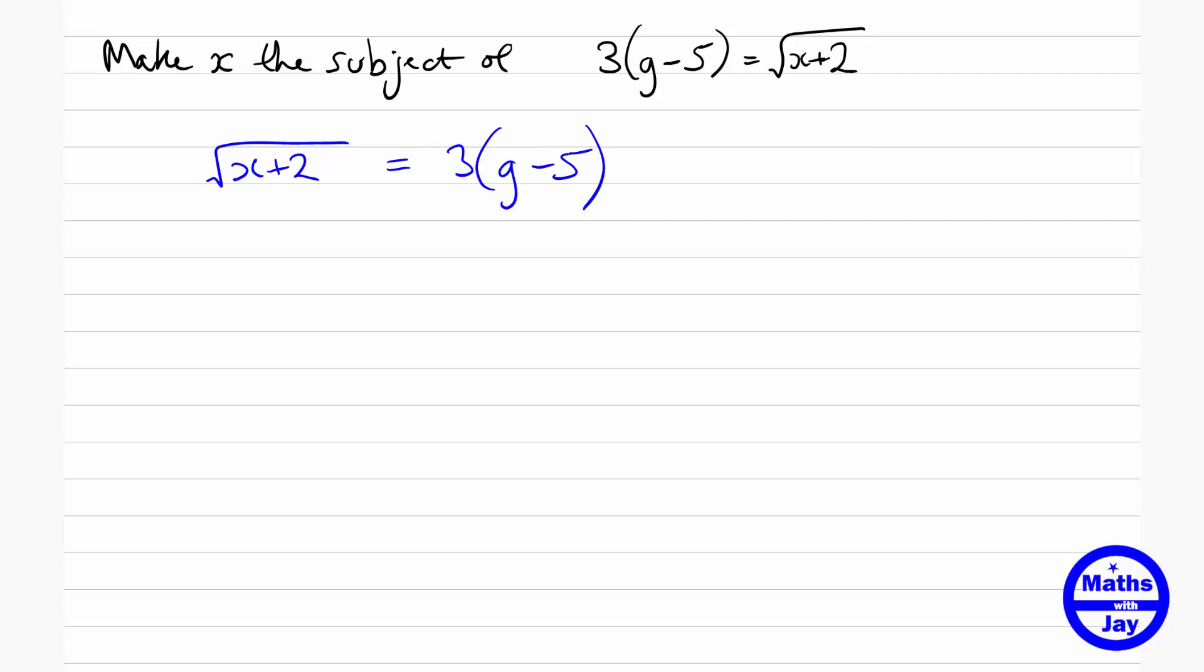And then we want to really get rid of the square root. So we just square both sides. So that gives us that x plus 2 is equal to all of the right-hand side squared, so that means we've got 9 times all of g minus 5 squared.